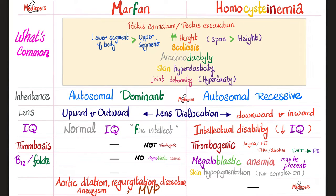Another key difference: homocystinuria is likely to present with megaloblastic anemia because many patients have the acquired form with vitamin B12 or folate deficiency. Some patients also lack vitamin B6, which leads to sideroblastic anemia — mostly microcytic. Neither type of anemia occurs in Marfan syndrome. Additionally, homocystinuria has skin hypopigmentation (fair complexion), not seen in Marfan. Marfan, on the other hand, has aortic root dilatation, aortic regurgitation with a murmur, aortic dissection, aortic aneurysm, and mitral valve prolapse with a murmur — none of these occur in homocystinuria.